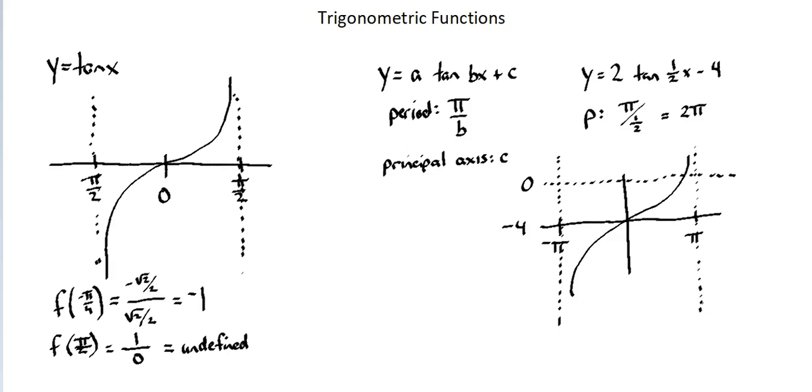This is a graph of y equals 2 tangent 1 half x minus 4. The period is doubled to 2 pi, and the vertical displacement results in a principal axis of negative 4.